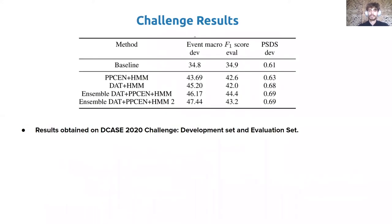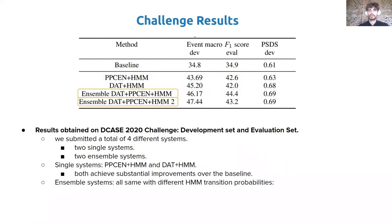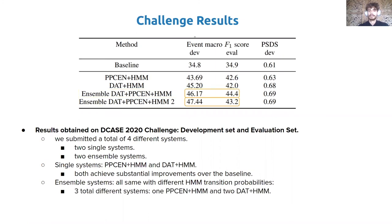Here, we show the results obtained on the DCASE 2020 challenge development set and evaluation set. We submitted a total of four different systems: two single systems — parallel PCEN plus HMM, and domain adversarial training plus HMM — both achieving substantial improvement over the baseline. We also submitted two ensemble systems with only different HMM self-loop probabilities, composed of three different single systems: one based on parallel PCEN and two based on domain adversarial training. One of these systems obtained higher results on the development set but failed to generalize. This system differed only in HMM self-loop probabilities, so HMM tuning must be handled with care, as it is easy to overfit the data used for tuning the self-loop probabilities.